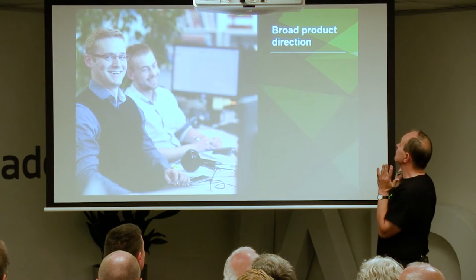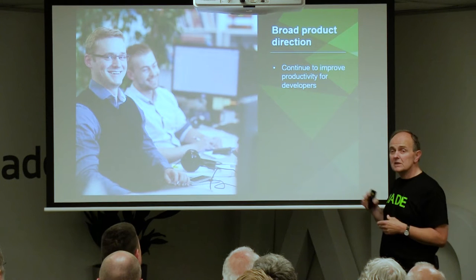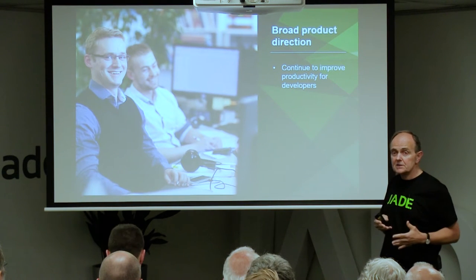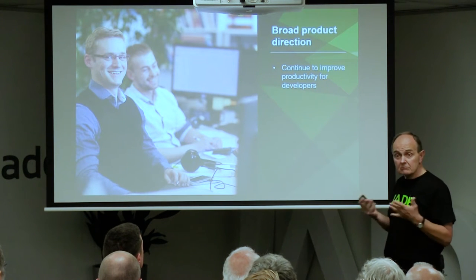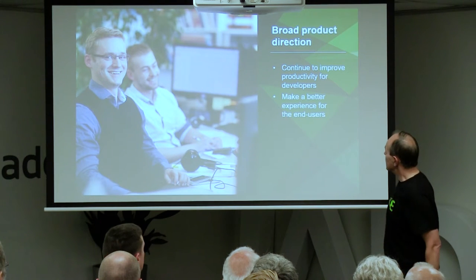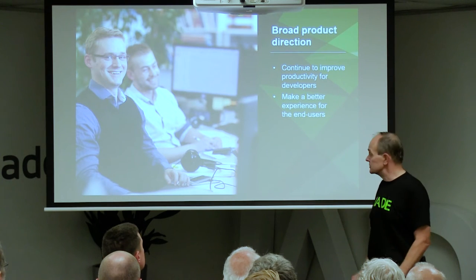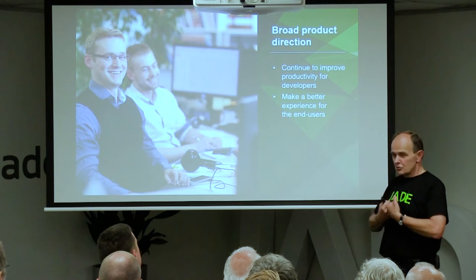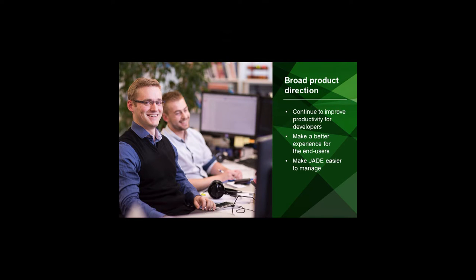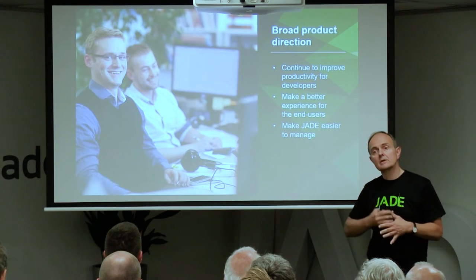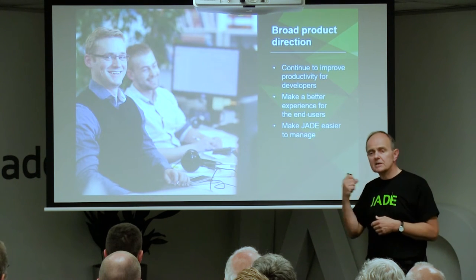We've got three broad areas of direction for the product. Productivity is a cornerstone for Jade — we are constantly looking at ways we can improve productivity going forward. You'll see a lot of that in the 2016 release. A better user experience for end users — and for a product like Jade, there are two sets of end users: yourself, the people building products with Jade, and your end users. So we're looking at both: making the IDE easier to use, but also giving you more facilities to make the end user experience of your product better. And lastly, to make Jade easier to manage. We need to make our utilities and the way we manage Jade faster and easier to use, especially with people having their systems remotely controlled in the cloud.